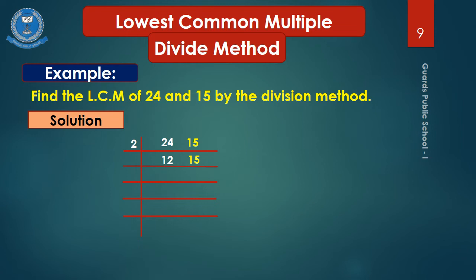Second step: now we have 12 and 15. Again, 2 divides 12 giving 6, but 15 is not divisible by 2, so 15 is written as it is. Then 2 divides 6 giving 3, and 15 remains as it is.